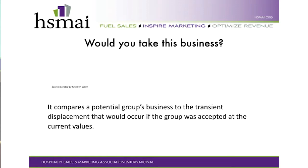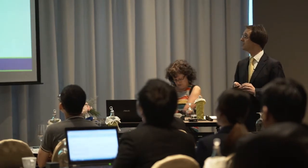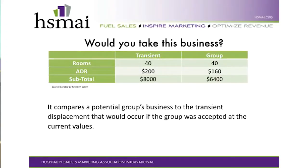Would you take this business? We have transient rooms of 40 at $200 ADR, bringing $8,000 total revenue. We have a group business also for 40 rooms, which would come to us only if we offer them $160 — giving $6,400. Straightforward question: would you take this group, yes or no? No.